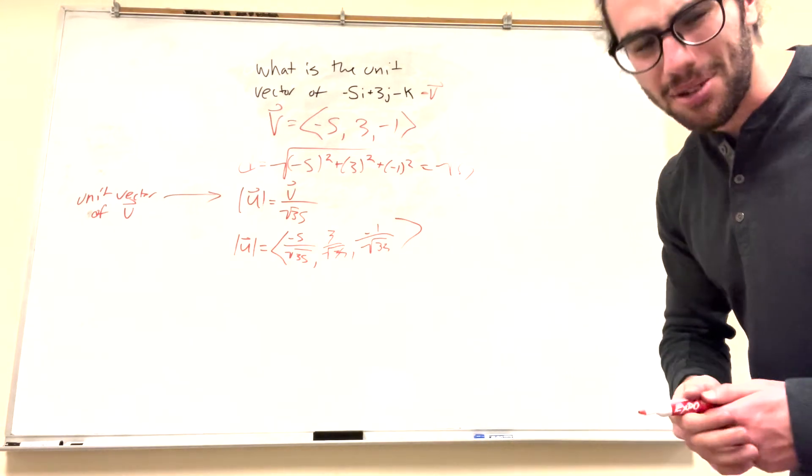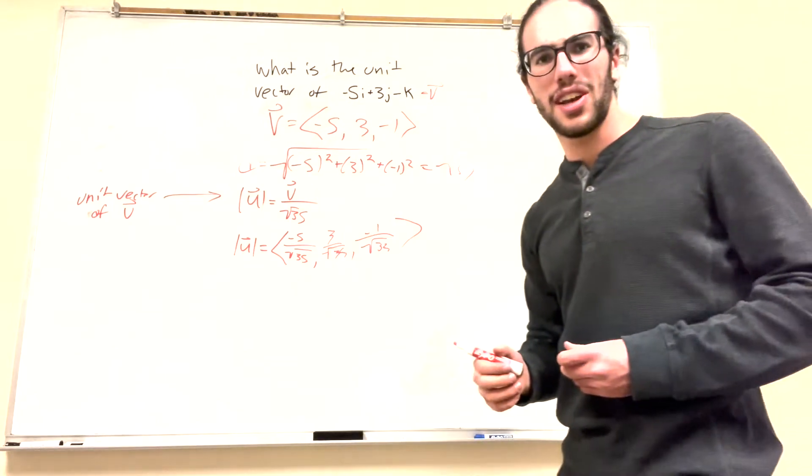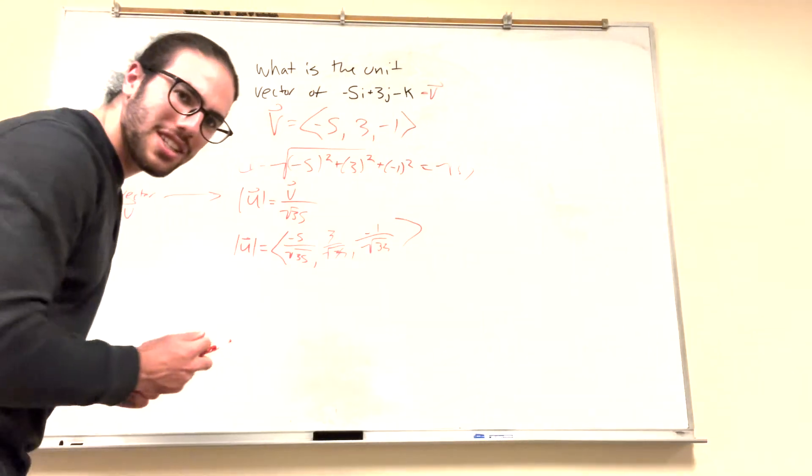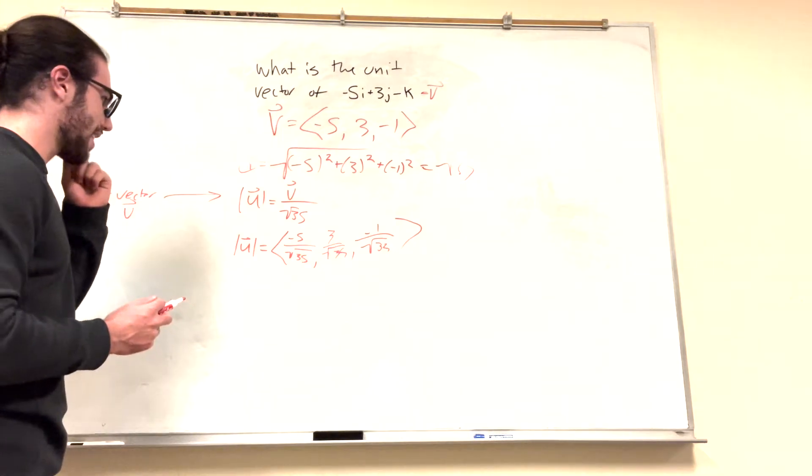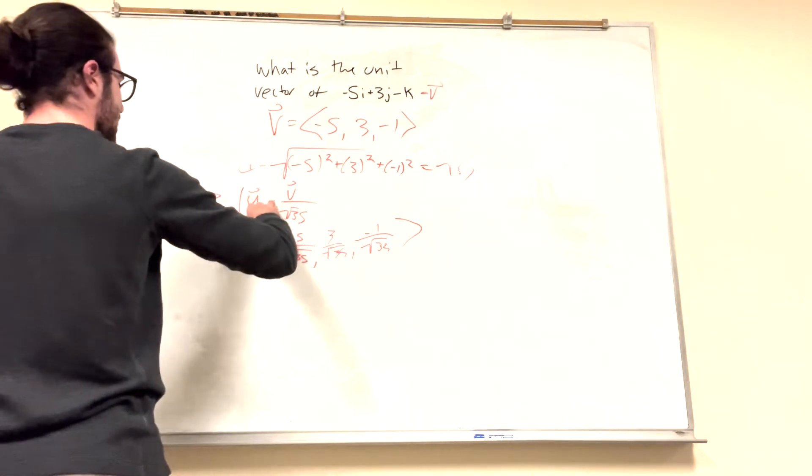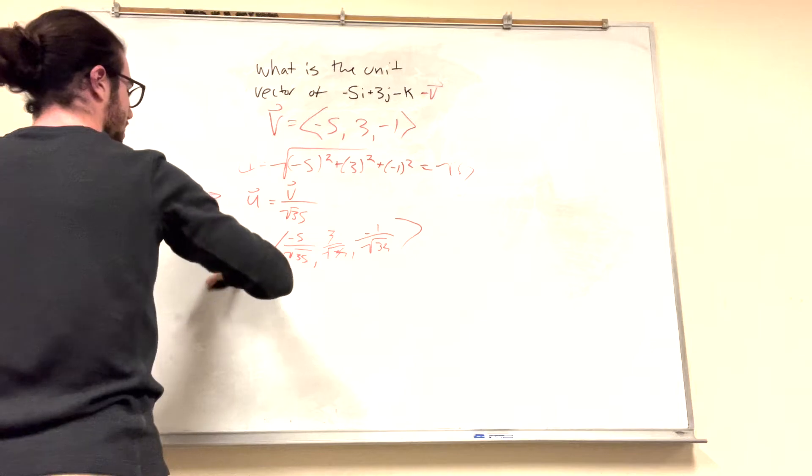So, just to prove to you guys what this means, I'm going to show you guys how it works. Let's say, what if we took the magnitude of the unit vector? Actually, I don't know why I have this in parentheses. This is not right. I hope you guys stuck around for this.